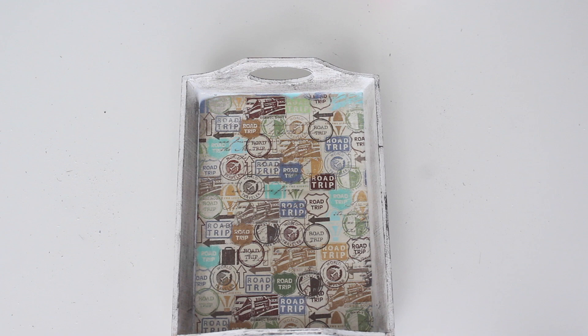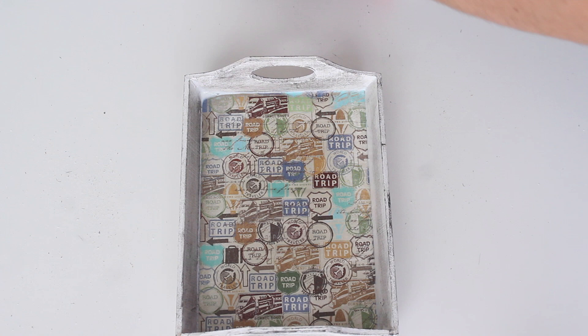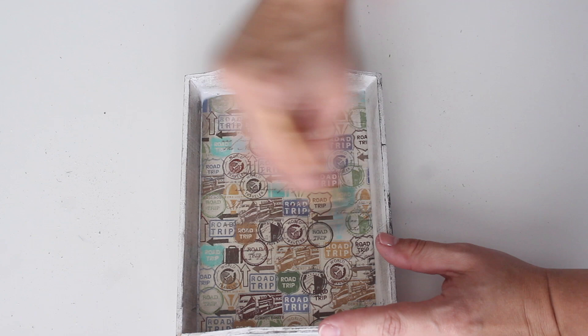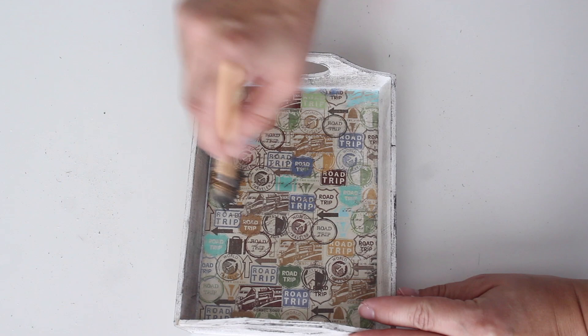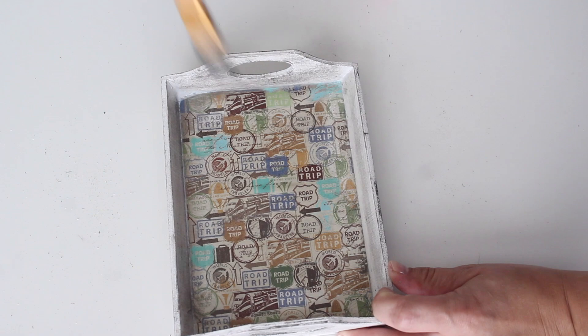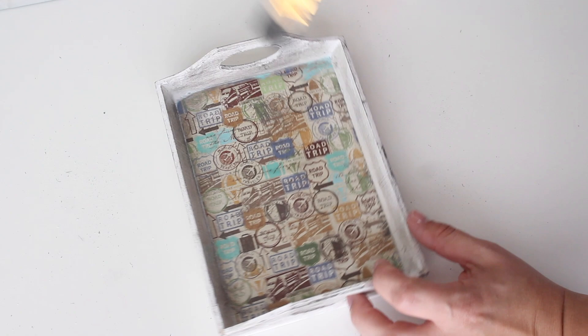Now the final step that I chose to take was to also distress the scrapbook paper. I thought that it looked a little bit too new compared to the rest of the tray. So I just did the exact same dry brushing method where I took my elephant gray chalk paint and dipped my brush in it, wiped off most of the excess, and then just dry brushed it all over the paper. I really focused on the edges to give it a worn look. That's a tip if you want something to look more realistically worn, is to focus on the edges and the creases.